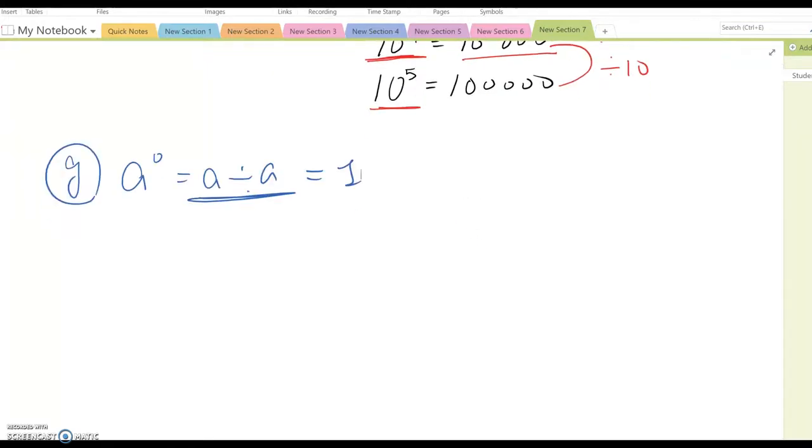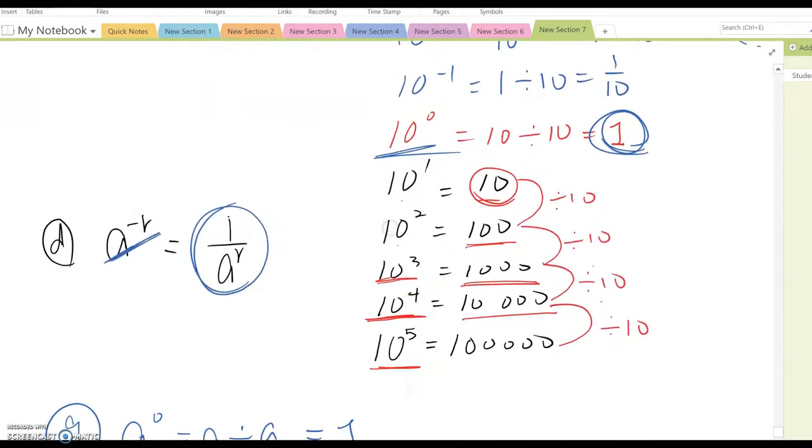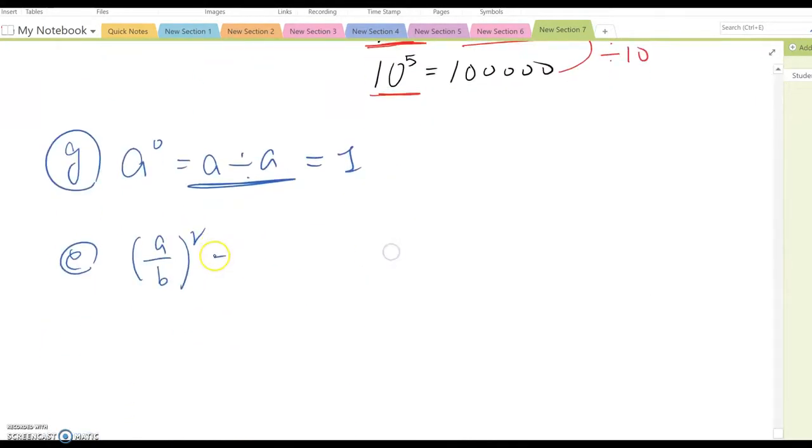Then now, property E, which is A over B to the R. This is similar to property three or C. It becomes A to the R over B to the R.